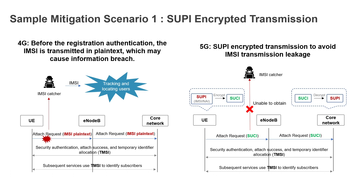Here is a sample mitigation scenario for SUPI — interrupted transmission. In the normal 4G case, IMSI is used in plain text format going from UE to eNodeB and then to the core network. After authentication, the network grants a TMSI, and the UE can then reach the network using the TMSI. In 5G, they introduced encrypting the SUPI into SUCI through Profile A encryption mechanism. The request is sent to the gNodeB, and when it reaches the core network, the core network decrypts SUCI into SUPI using the home network private keys. Once authentication is done, the core network sends back the GUTI, and the UE can then reach the network using the GUTI.